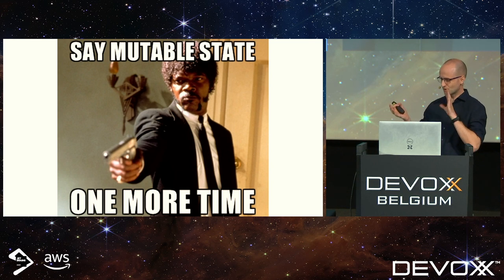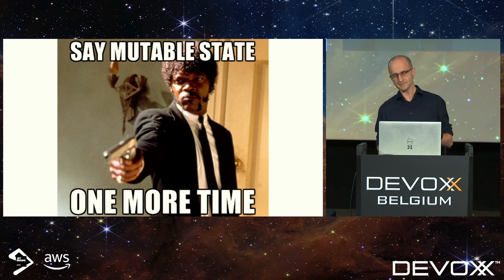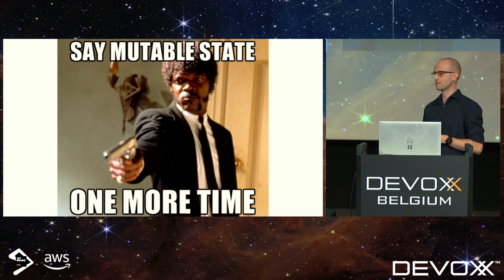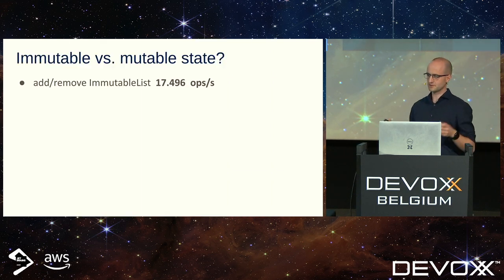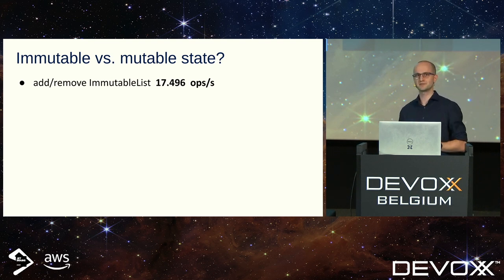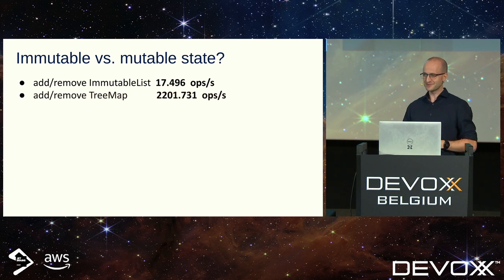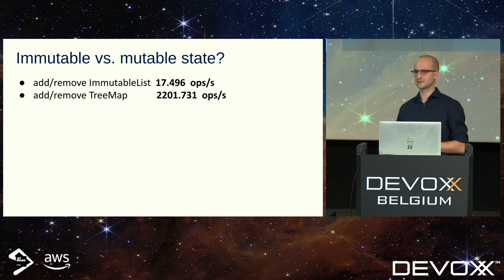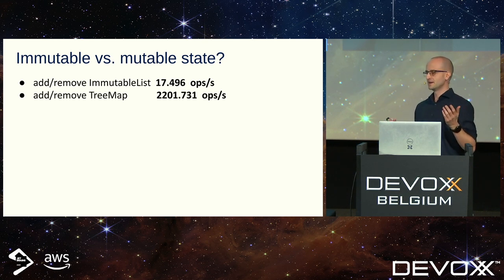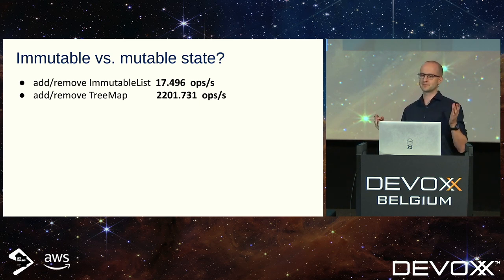Should my state be immutable or not? By default, of course, immutable. But as usual, it depends — in my case when we were using immutable lists, we could handle about 17 operations per second. Then we switched to good old-fashioned Java TreeMap and got 2200 operations per second. This difference is so huge I cannot simply ignore it. So we went with mutable state — but there is still an actor which acts as a state guard, so I'm comfortable in a multi-threaded environment.